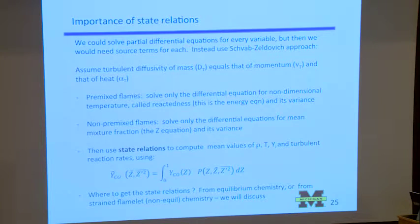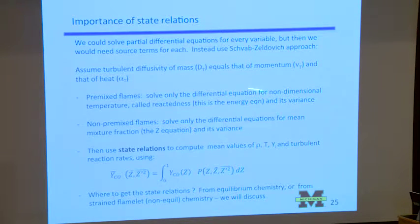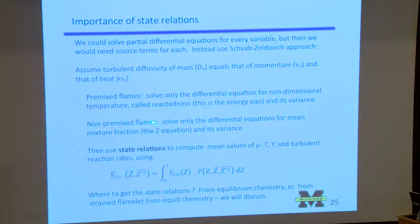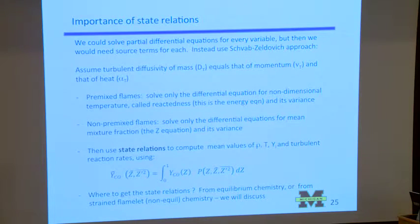To repeat: we could solve the differential equations, but we need source terms. Instead, we use this approach where we solve the differential equation for something — in premixed flames a non-dimensional temperature called reactedness, and in non-premixed flames we solve for Z, the non-dimensional hydrogen atom mass fraction. Then we plug it into an equation like this and get the mean quantities at each point.